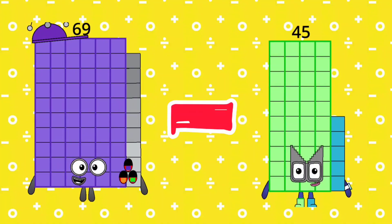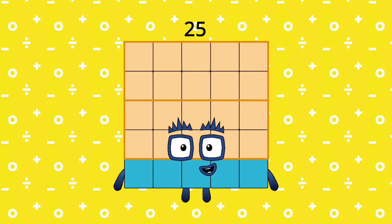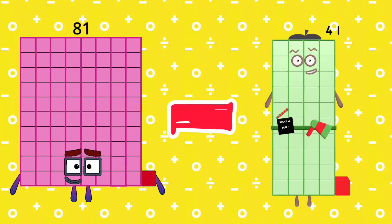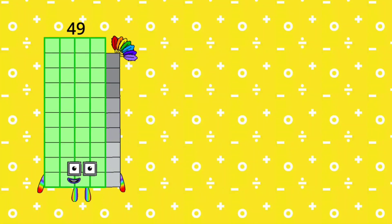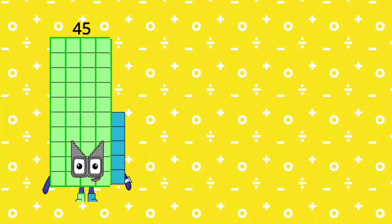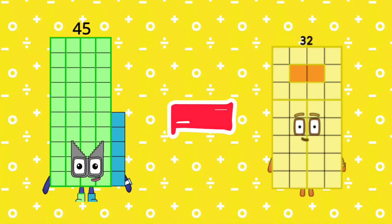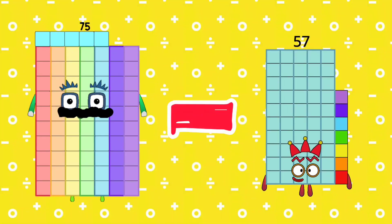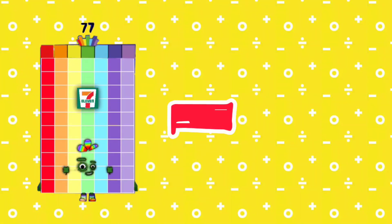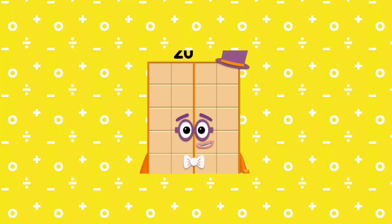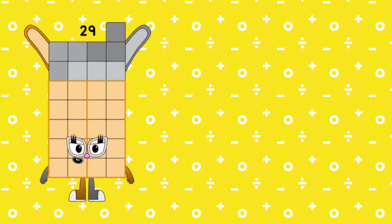69 minus 45 is equal 24. 81 minus 41 is equal 40. 49 minus 25 is equal 24. 45 minus 32 is equal 13. 75 minus 57 is equal 18. 77 minus 57 is equal 20.